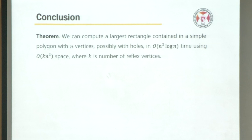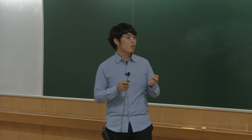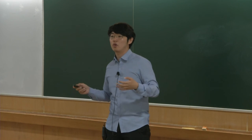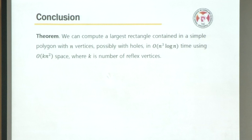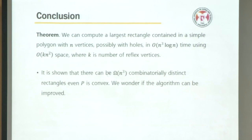In conclusion, we can find the maximum area largest rectangle contained in a simple polygon with n vertices, possibly with holes, in O(n³ log n) time using O(kn²) space, where k is the number of reflex vertices. The case with holes can be handled similarly with some additional techniques. It has also been shown that there can be Ω(n³) combinatorially distinct rectangles even when P is a convex polygon, so we wonder whether our algorithm can be improved. Since any algorithm computing every combinatorially distinct rectangle needs at least O(n³) time, this remains an open question. Thank you.